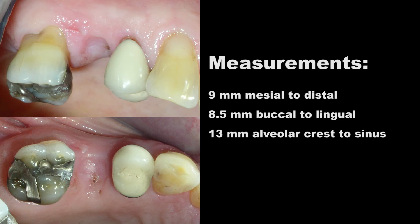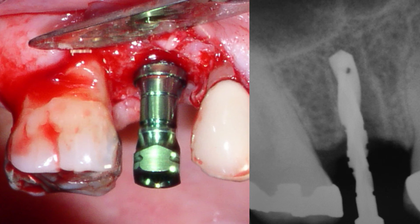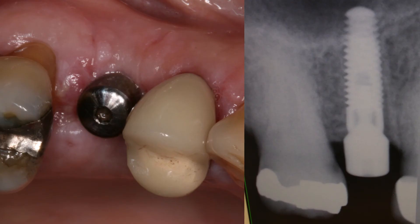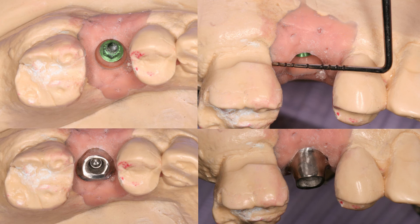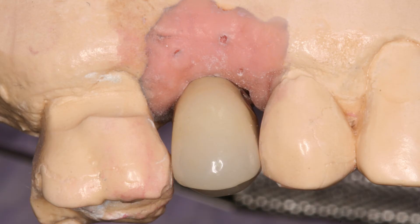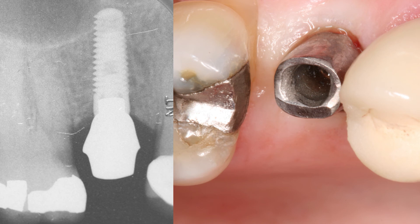Let's go through a case. Here's a 71-year-old man who needs replacement of number 4. I don't have the CT, but I'll give you the measurements: 9 millimeters from mesial to distal, 8.5 millimeters buccal to lingual, and 13 millimeters from the alveolar crest to the sinus. To figure out the appropriate size implant, we subtract 2 millimeters from each tooth to the implant, giving us a 5 millimeter maximum implant diameter mesiodistally. Notice the marginal ridges converge slightly, so for better emergence we may favor a slightly smaller implant. There's enough buccal-lingual width for up to a 5 millimeter implant. Length isn't an issue, and it's okay for the implant to touch the sinus floor. We actually did a small sinus bump, so there was plenty of room for our 4.1 by 13 millimeter Zimmer tapered screw vent implant.